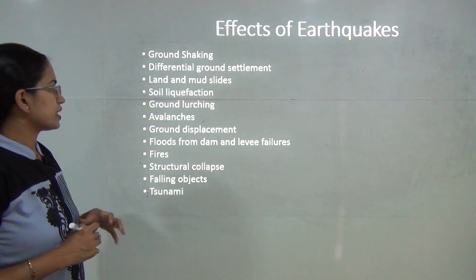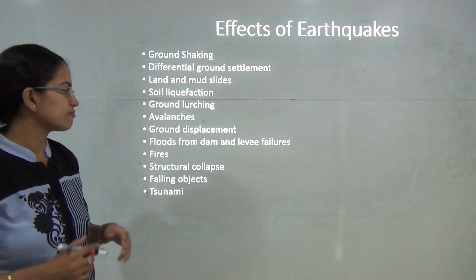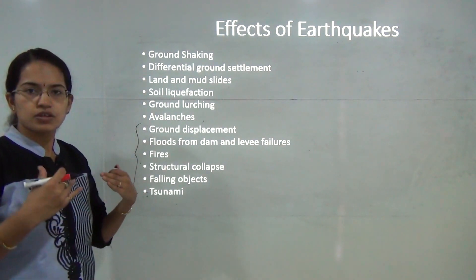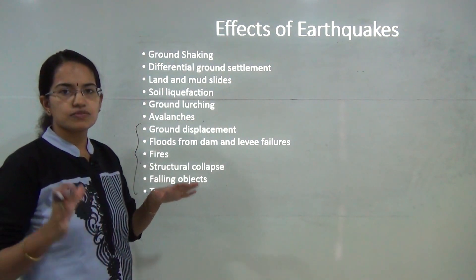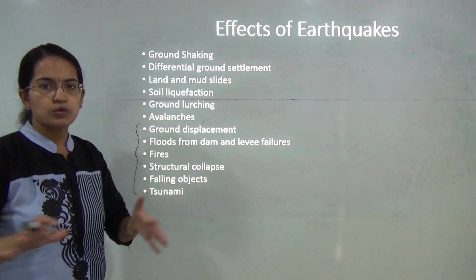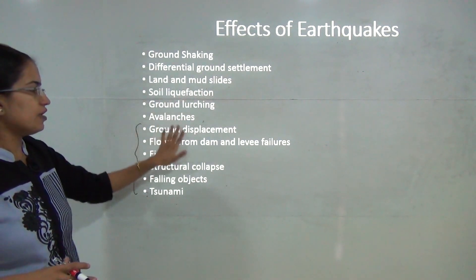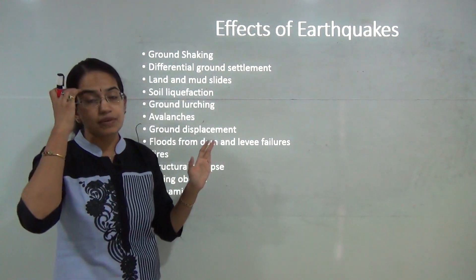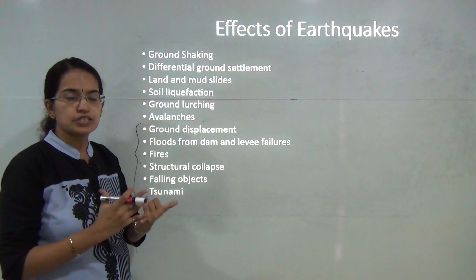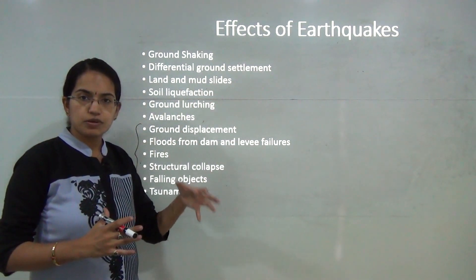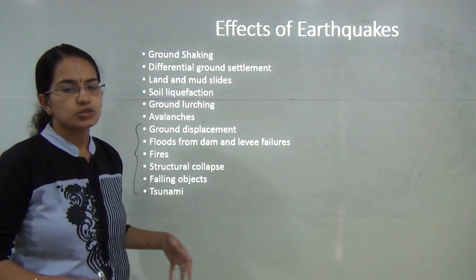The effects of earthquakes can be divided into two groups. Effects visible on the landform include shaking of the ground surface, demolition of settlements, soil liquefaction, and ground lurching. Effects on people and infrastructure include floods in river areas, fires, structural collapse and damage to buildings, falling or toppling objects, and — when the earthquake occurs beneath water or close to water bodies — tsunamis.